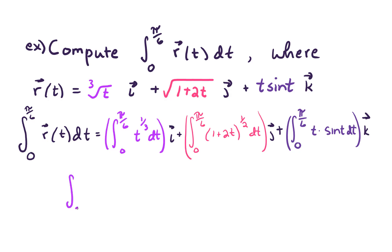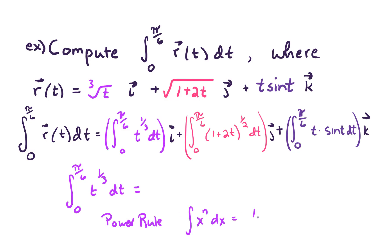First, let's do the integral from 0 to pi over 6 of t to the 1 third dt. For this integral we're going to need our generalized power rule, which says the integral of x to the n dx equals 1 over n plus 1 times x to the n plus 1 plus c, provided n is not equal to negative 1. If it's negative 1, then it's the natural log absolute value. You could review those rules of integration — we will use them often in our course.